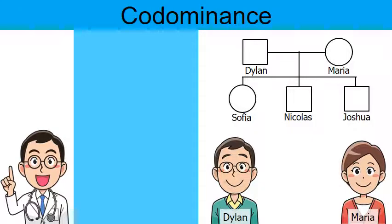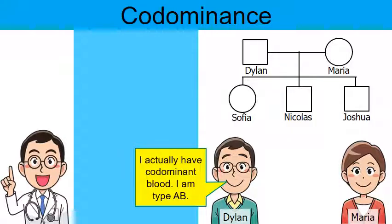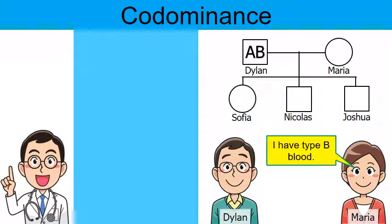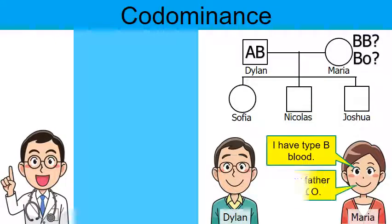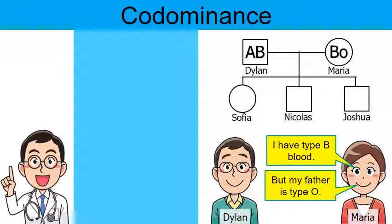Let's come back to our family. Dylan says he actually has codominant blood — he is type AB. So in the pedigree for Dylan, I can label AB as his genotype. Maria the mom says she has type B blood. There are two possible genotypes for type B blood, but she also says her dad was type O — which means he passed an O allele to her. So she cannot be homozygous dominant; Maria must be heterozygous for type B blood. I can label her in the pedigree as genotype B with the recessive O.